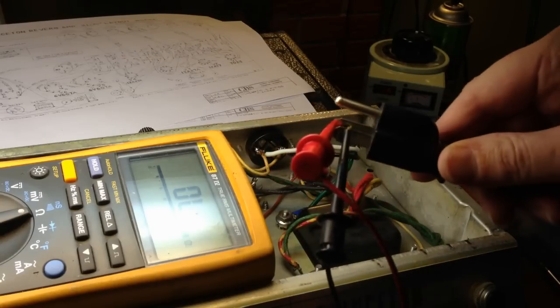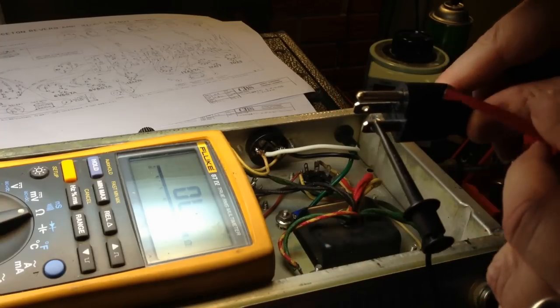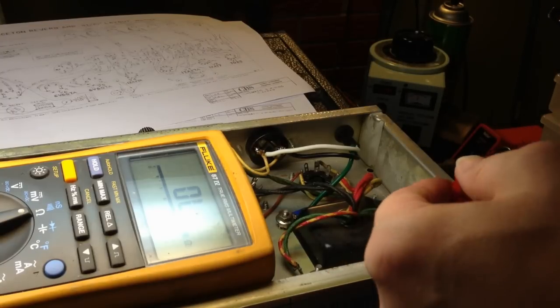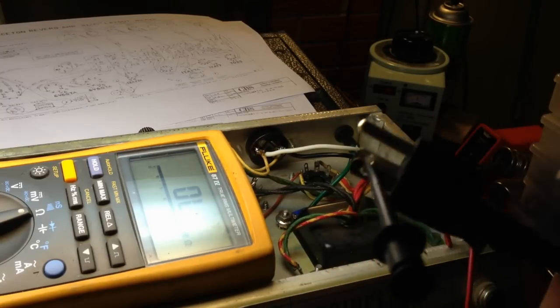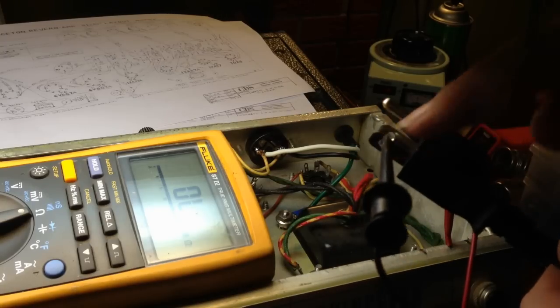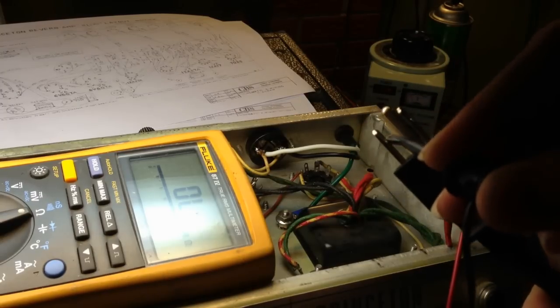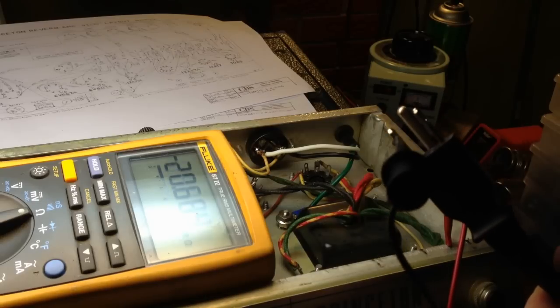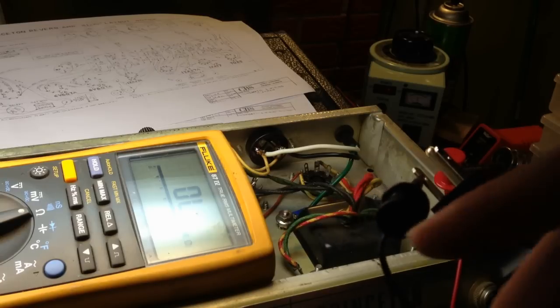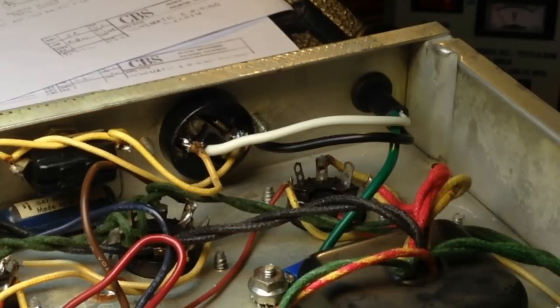We can also check to make sure nothing is grounding out. So let's actually it would be easier probably to hook up somewhere on the chassis. So we'll hook up one side to the chassis. And then we'll start out with that side and then this side. And we have open lead in both cases. So that's good. All right.